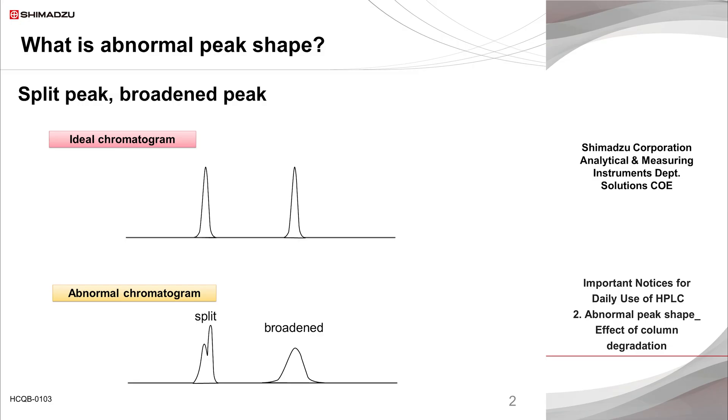As shown at the bottom of this slide, peak splitting, in which one peak splits into two or more peaks, and broadening, in which the peak becomes wider, distorted, and asymmetric, are commonly known as abnormal peak shape.